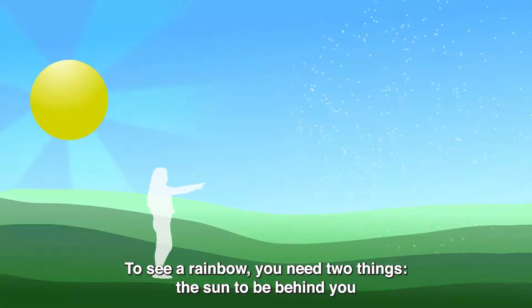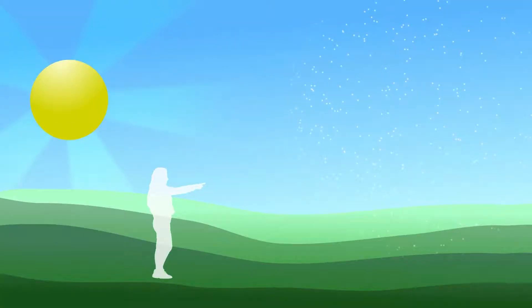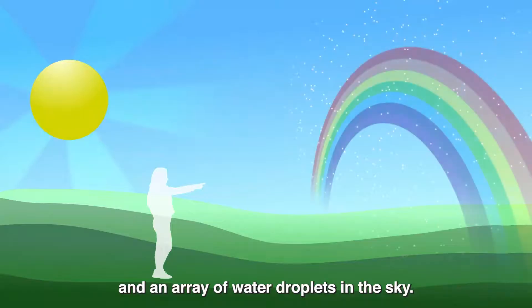To see a rainbow you need two things. The sun to be behind you and an array of water droplets in the sky.